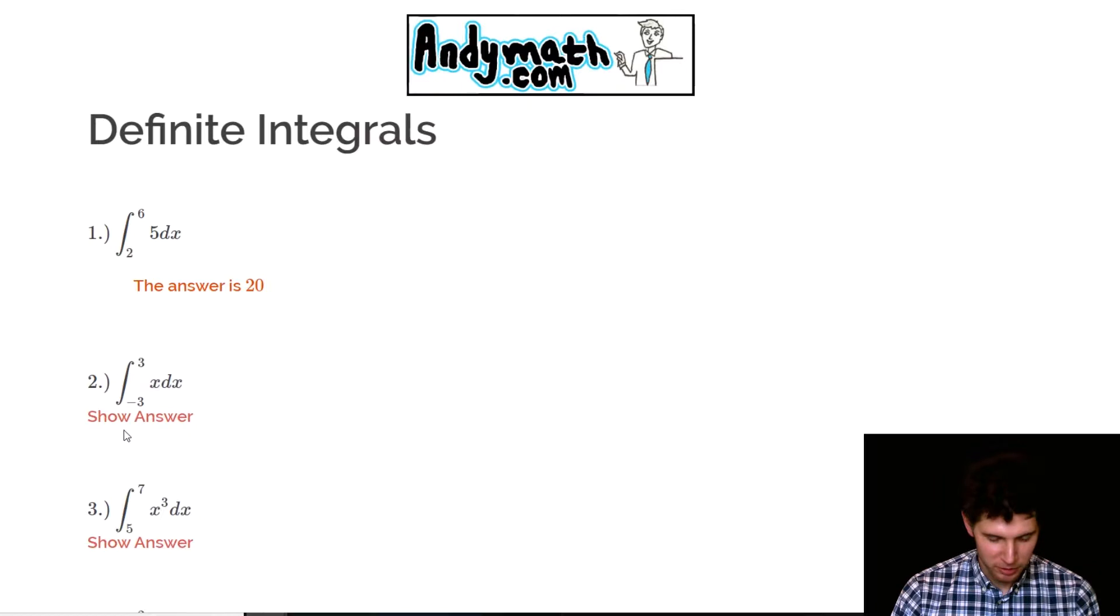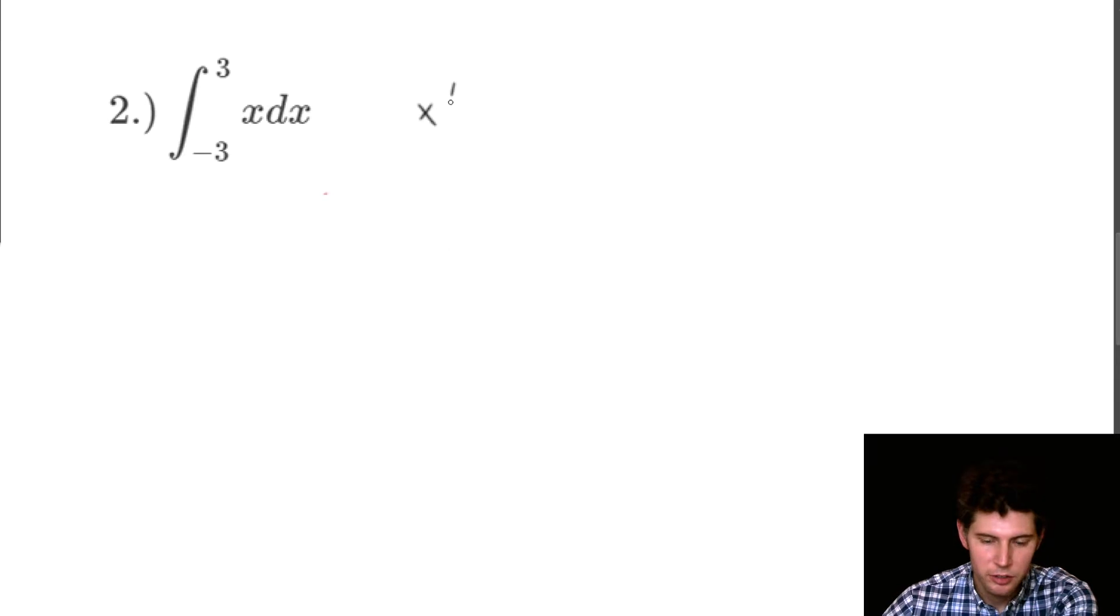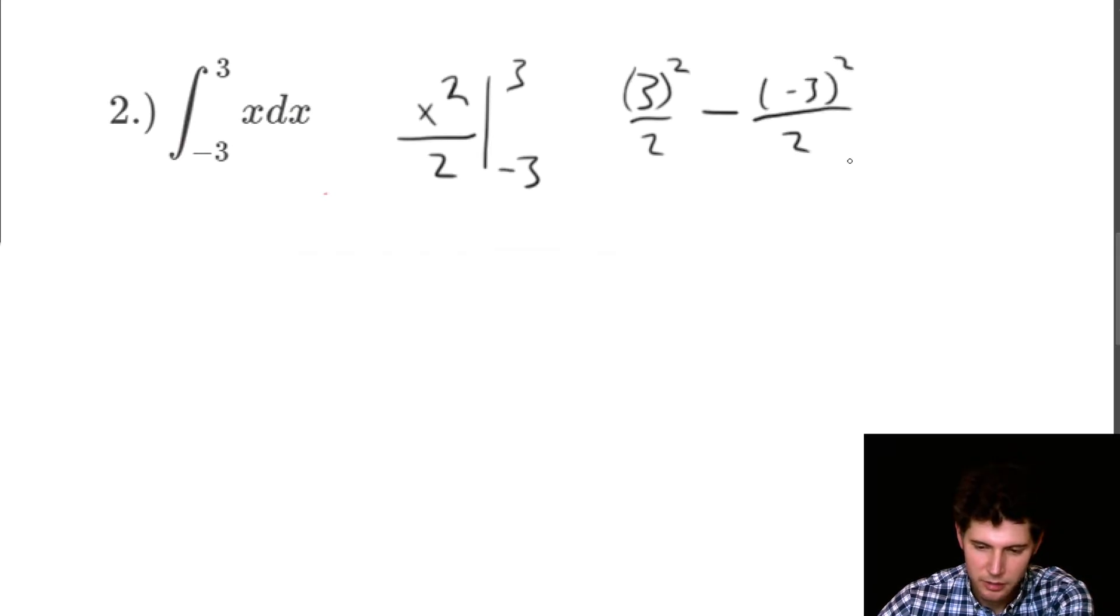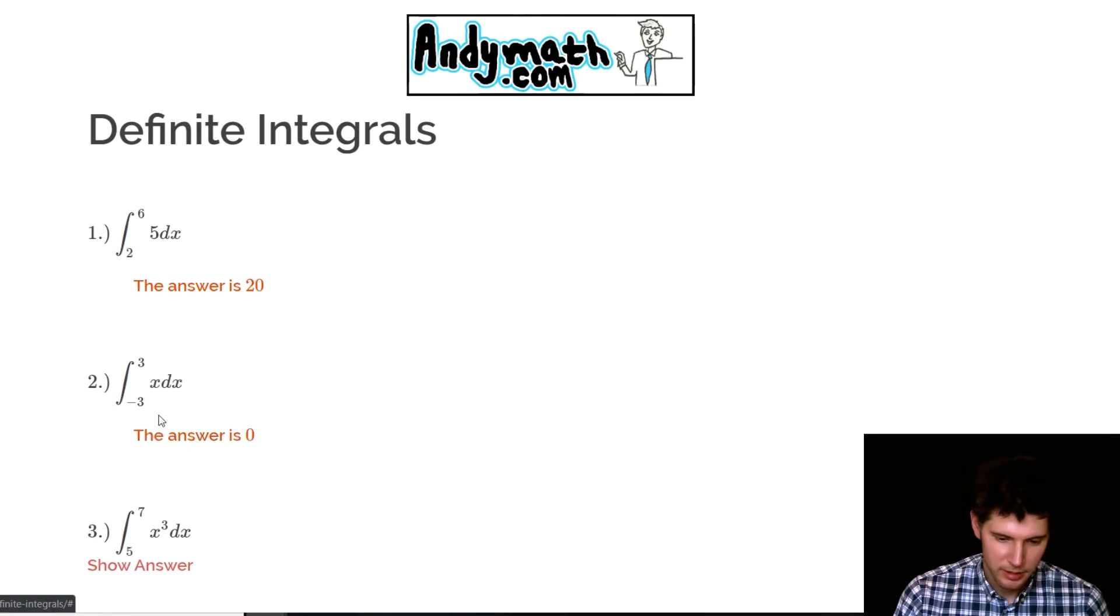Now the next one, the integral from negative three to three of x dx. So this is x to the one. So if we add one to that, it's going to be x to the two, and then we divide by the two. And we're going to evaluate from negative three to three. So we plug the three in, three squared over two, minus negative three. So three squared is nine over two is nine halves, minus the negative three squared is also nine over two. So the answer is going to be zero.